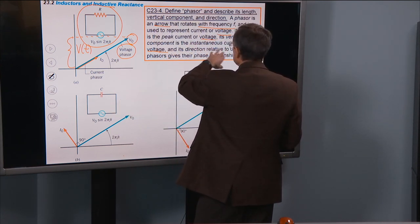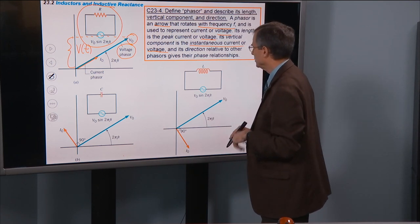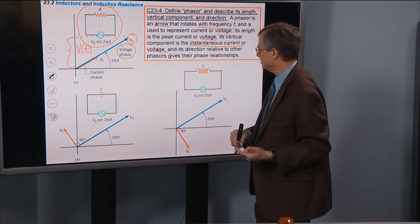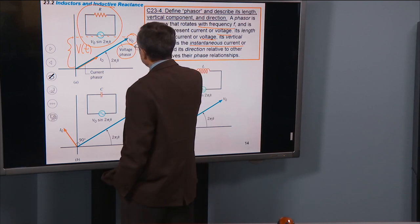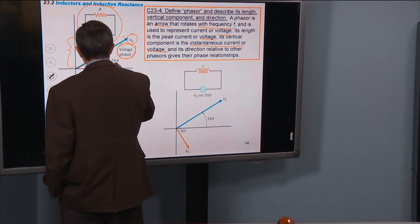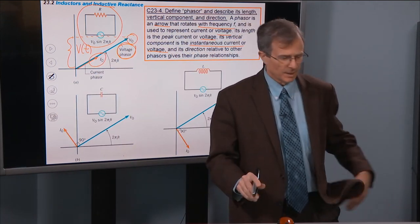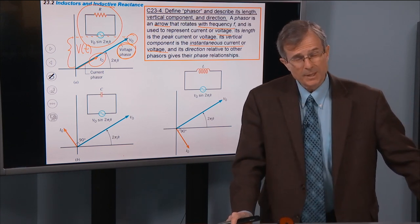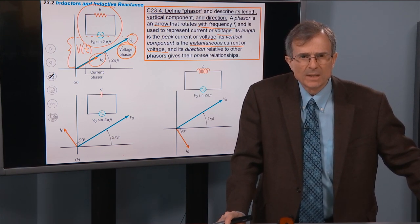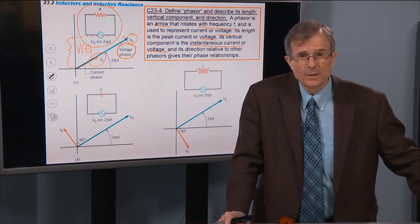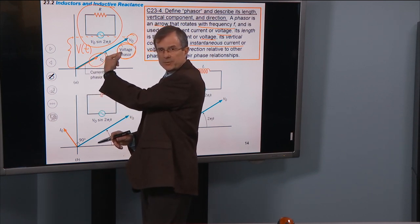All right. Let's see. Its vertical component is the instantaneous current or voltage, and its direction, instantaneous meaning time dependent current or voltage. And the direction relative to other phasors gives their phase relationships. All right. For the purely resistive circuit, we've got a voltage phasor and a current phasor, denoted here by the red arrow, that are pointing in the same direction. And you might say, why are they pointing in the same direction? And my answer is that the voltage and the current in a purely resistive circuit are in phase. There's no phase difference between them. So that's why we put these two phasors pointing in the same direction for a purely resistive circuit.